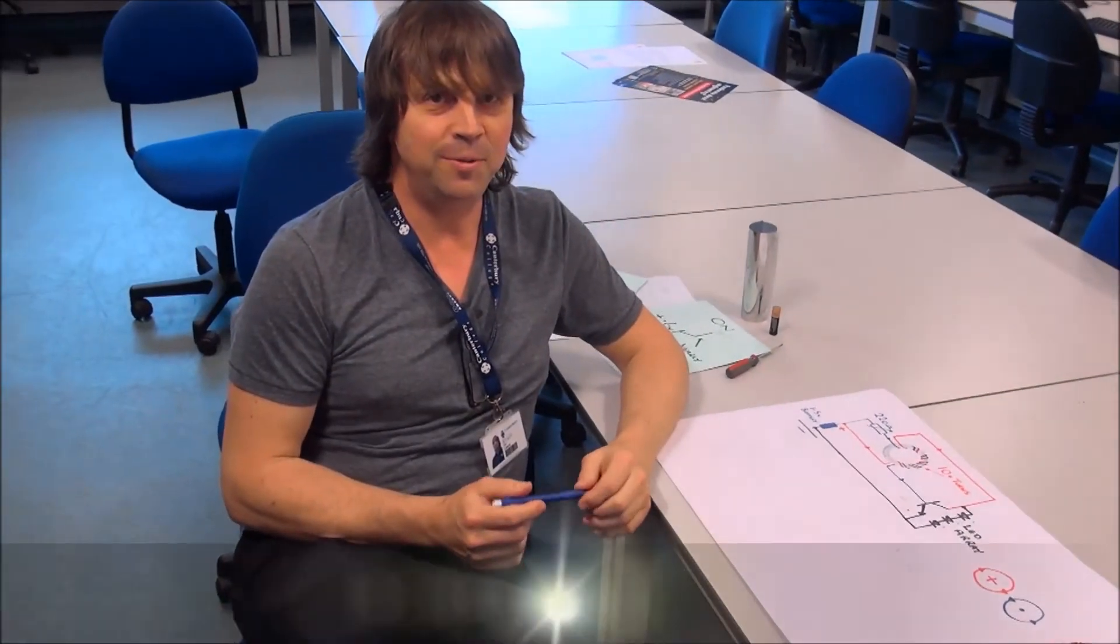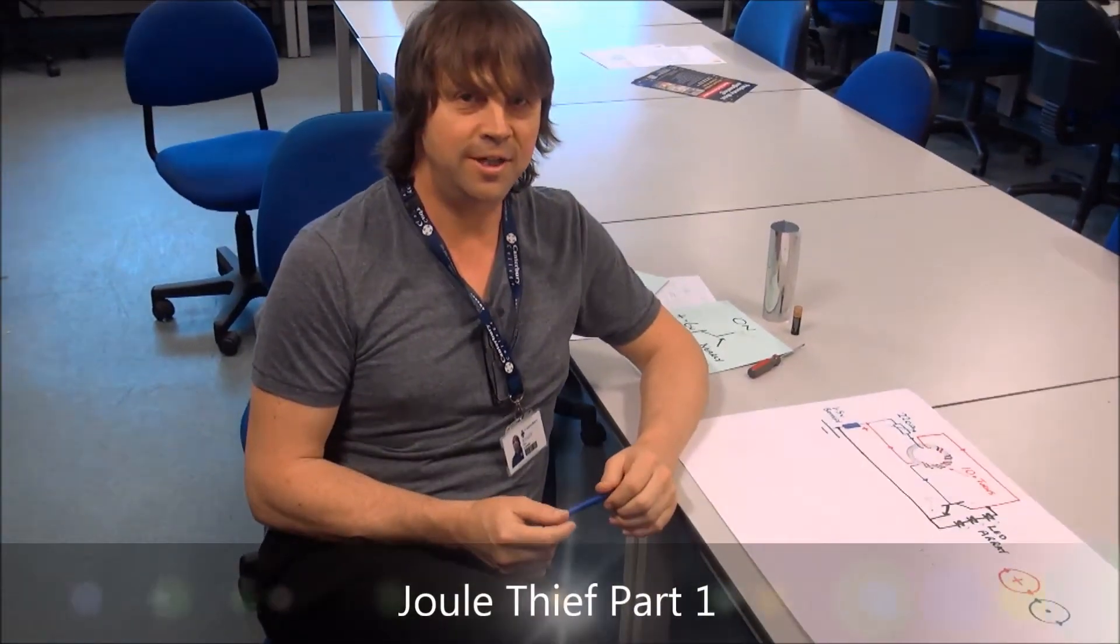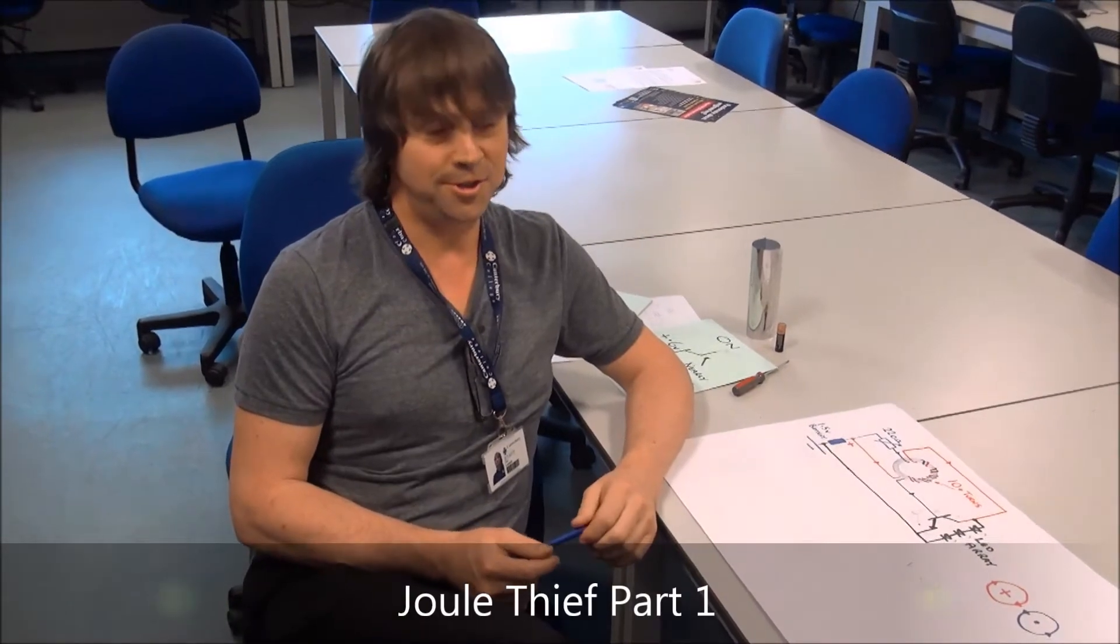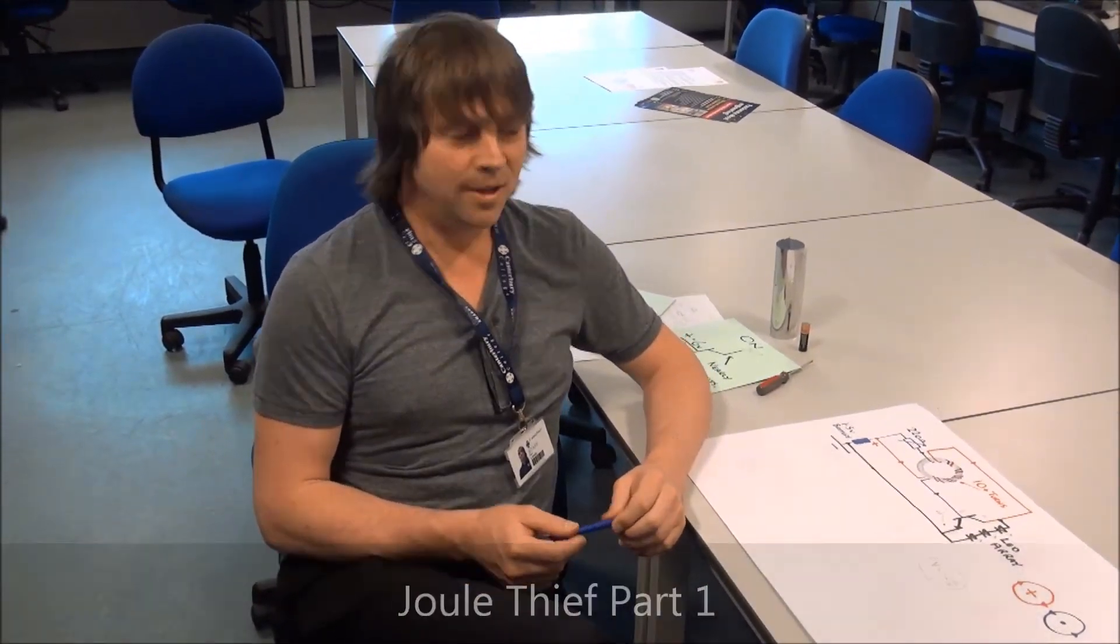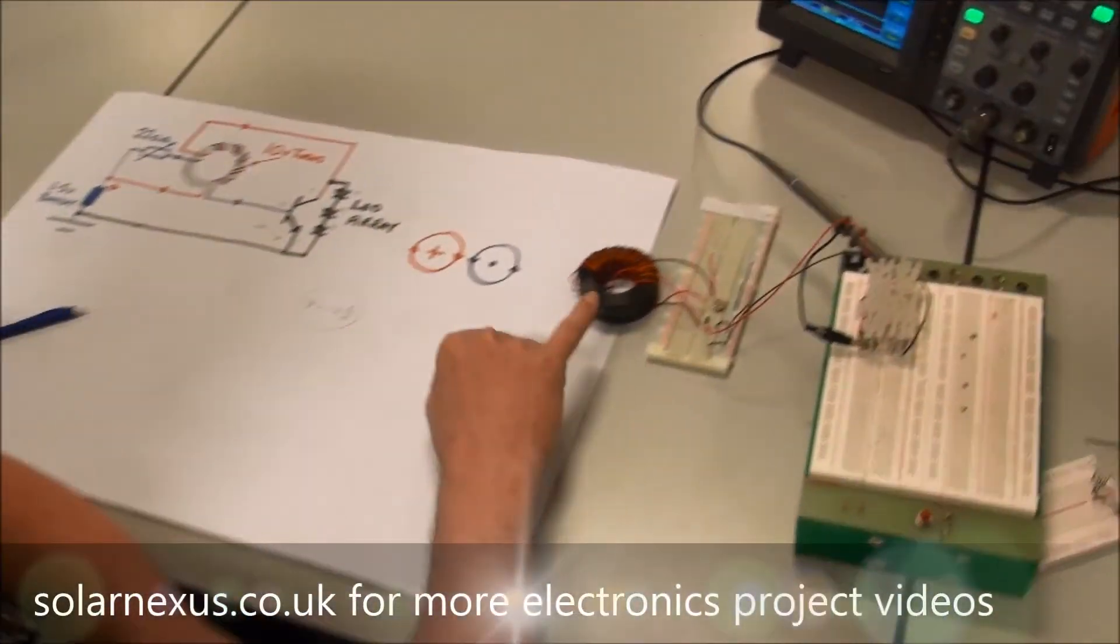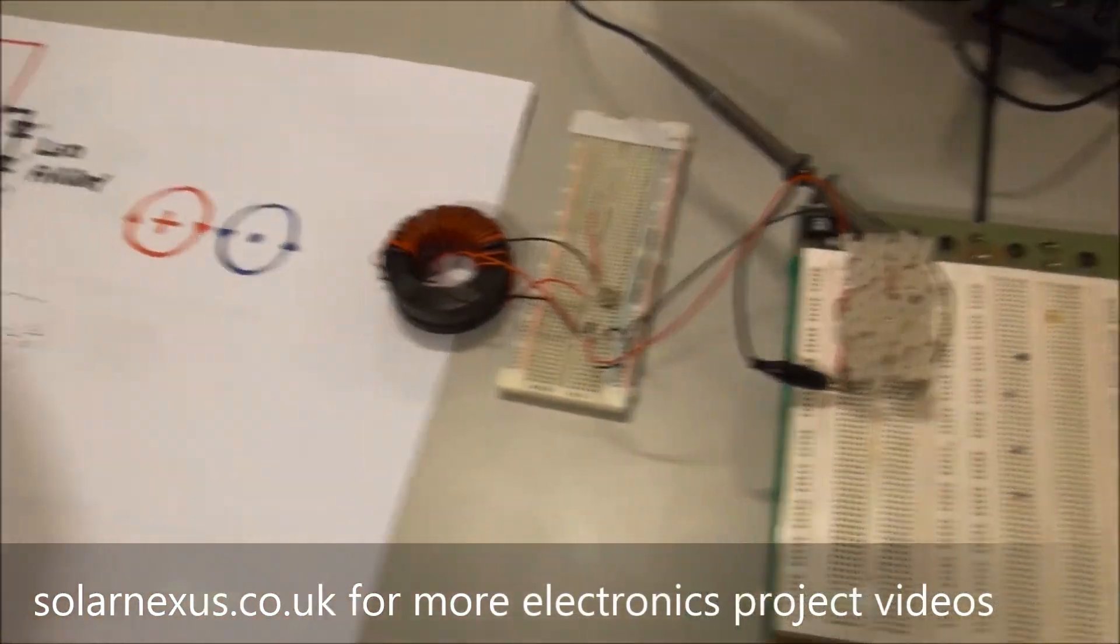Okay, hello and welcome to my dual thief circuit, which I intentionally spelled wrong so I could stand out on the internet. Here it is, this is a well-known circuit that uses a coil which has the current flowing into the coil going in opposite directions. We'll talk about that in a bit.